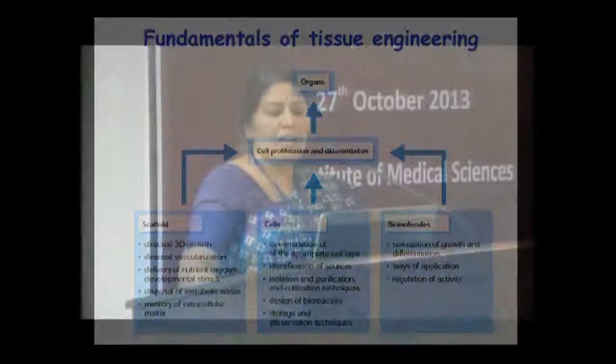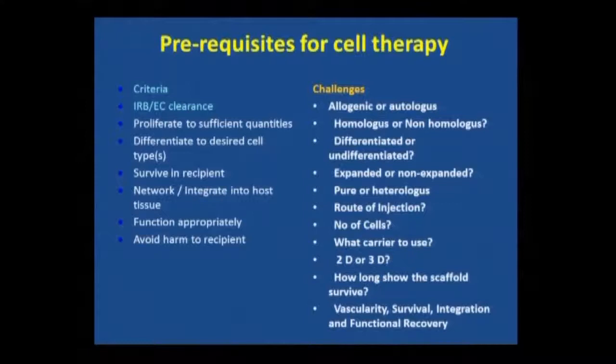There are NIH guidelines for when we go ahead with cell therapy: when we have clearance from our IRB and ethics committee, when we have an adequate number of cells, the desired cell type is made, they survive, network, integrate, and function, and cause no harm. And what are the challenges? All the previous speakers have emphasized on the questions that have not yet been answered.